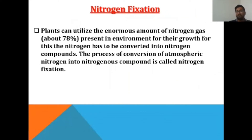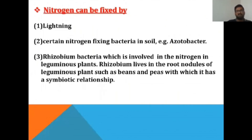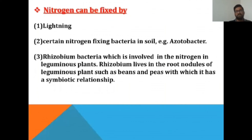Plants cannot directly utilize the enormous amount of nitrogen gas present in the atmosphere, which is about 78%. For this, nitrogen must be converted into nitrogenous compounds. The process of conversion of atmospheric nitrogen into nitrogenous compounds is called nitrogen fixation. It can be done by lightning, or by certain nitrogen-fixing bacteria in the soil such as Azotobacter and Rhizobium. Rhizobium lives in the root nodules of leguminous plants such as beans and peas in a symbiotic relationship.